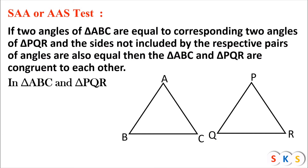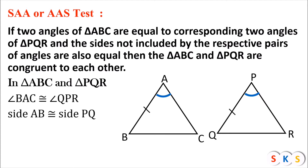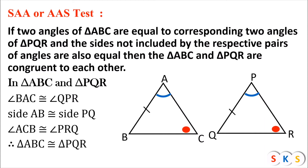Angle BAC is congruent to angle QPR. Side AB is congruent to side PQ. Angle ACB is congruent to angle PRQ. Therefore, triangle ABC is congruent to triangle PQR.